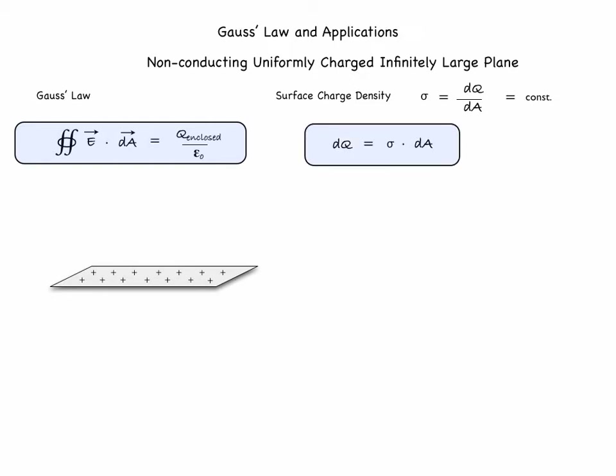At any given point, if we need to find how much charge resides on a given portion of the plane, we calculate the area of that region and multiply by the surface charge density: dq = sigma times dA. The question is then what will be the electric field due to those charges on the infinitely large plane.